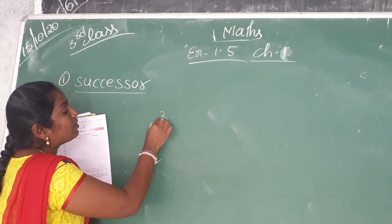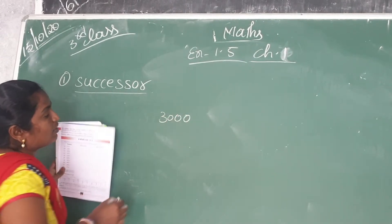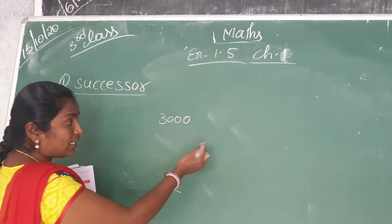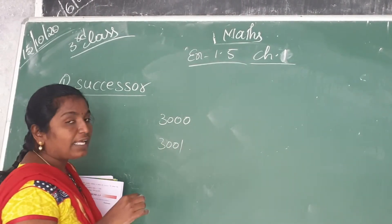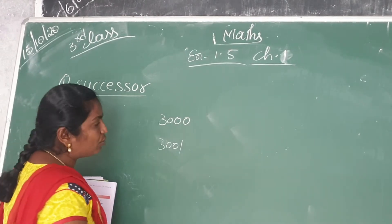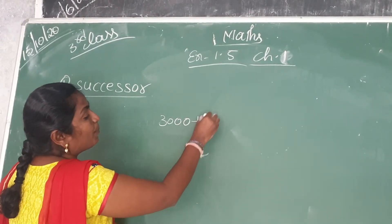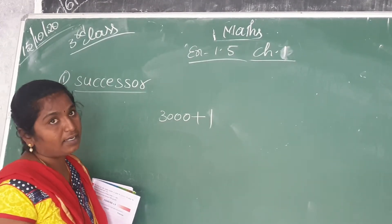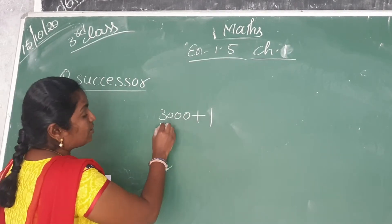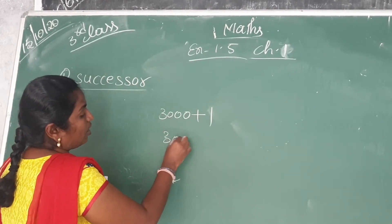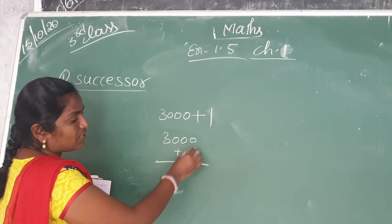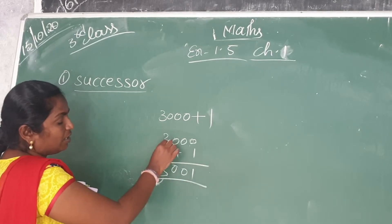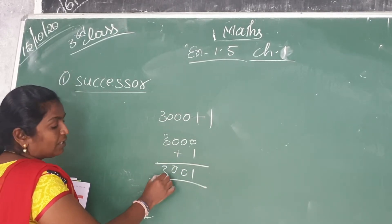How do we get the successor? For example, the number is 3000. Since we have successors, we add 1. So, 3000 plus 1. 0 plus 1 is 1, 0 plus 0 is 0, 0 plus nothing, and 3 stays as 3. So the successor of 3000 is 3001.